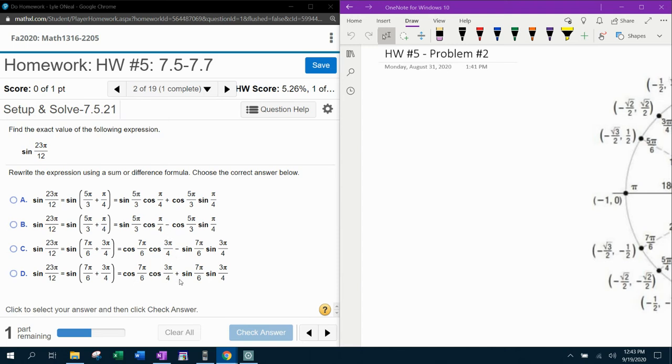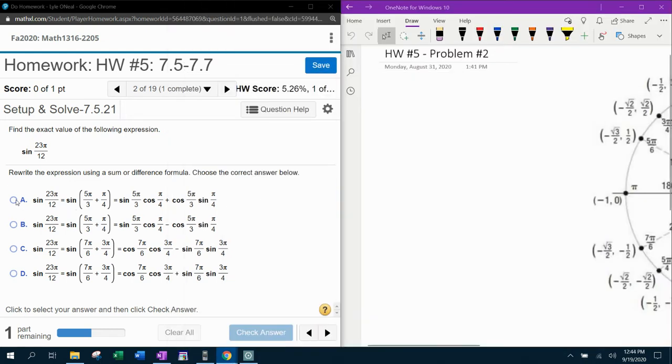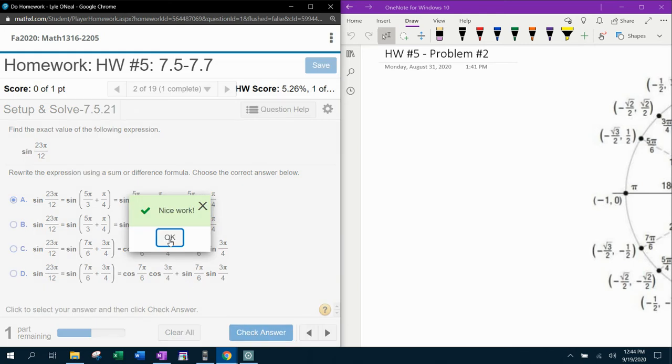And it's not D because it's got cosine, cosine. And the formula we need has to have sine and cosine. So that means it has to be answer choice A by the process of elimination.